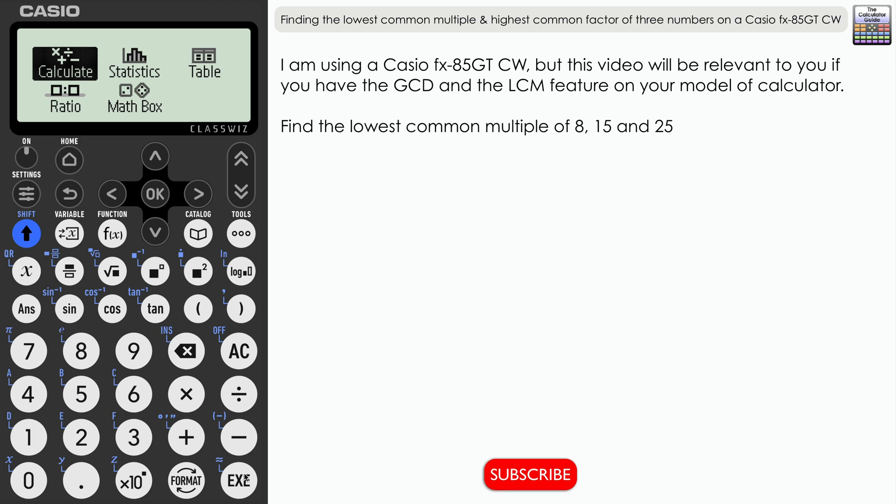Just check out to see if your calculator has those features. Incidentally, it is not available on the fx-991CW model. In the first example here, we need to find the lowest common multiple of three numbers: 8, 15, and 25.